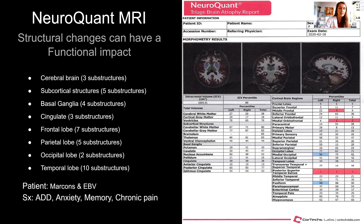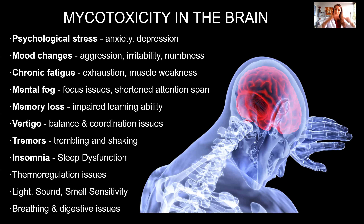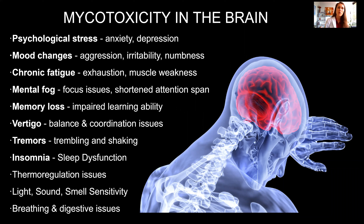I'll show a neuroquant from one of my patients who had MARCoNS — a bad type of bacteria that hides in the sinuses — along with ongoing EBV. The symptoms associated with this patient were ADD, anxiety, memory issues, and chronic pain. Now let's look at how mycotoxicity affects the brain differently, and I'll show a neuroquant correlated with a patient who has ongoing mycotoxicity in their system — you'll see how much different it looks.